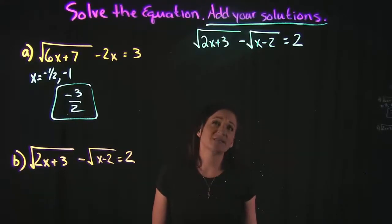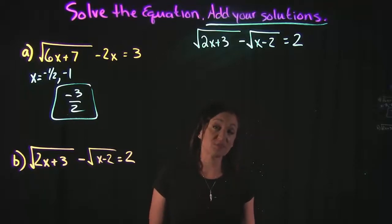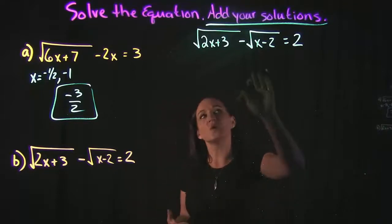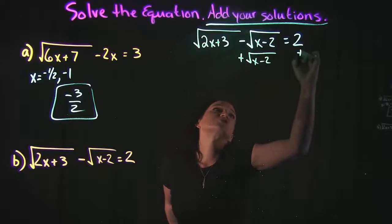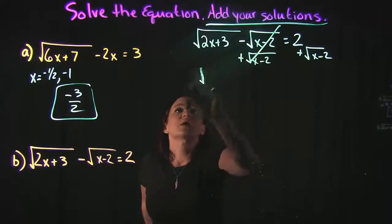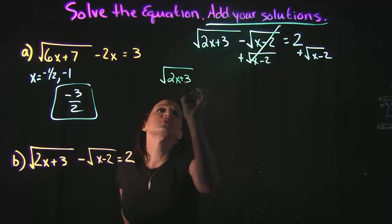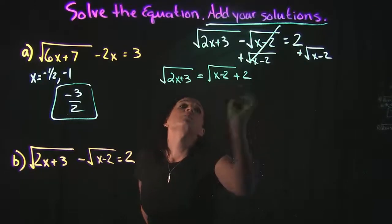For our next example we have the square root of 2x plus 3, minus the square root of x minus 2, equals 2. Since we have two radicals, we want one on either side of the equation. I'm going to add the square root of x minus 2 to the right side, giving us: square root of 2x plus 3 equals the square root of x minus 2 plus 2.